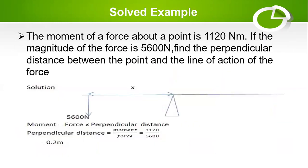Now let's look at a worked example to close out this topic on forces in equilibrium. The moment of a force about a point is 1,120 newton-meters. The magnitude of the force is 5,600 newtons. Find the perpendicular distance between the point and the line of action of the force. The diagram shows the force applied and we need to find the perpendicular distance, with the fulcrum or pivot kept constant.